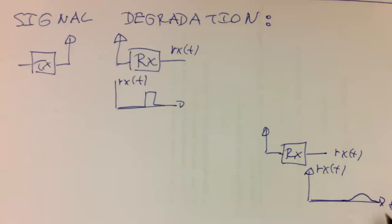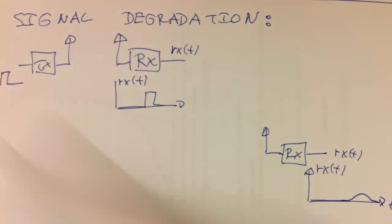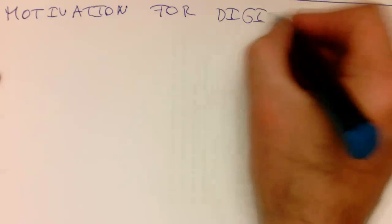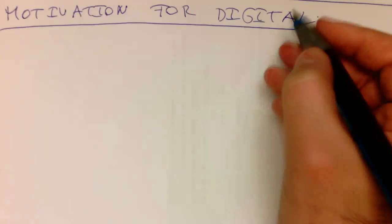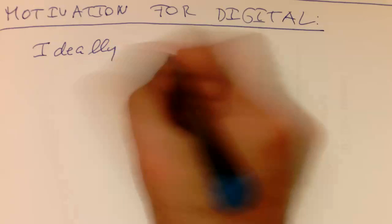Now in a digital system, what we would like to have is we would like to transmit that pulse here. And we would like to have always at the output here this pulse, irrespective of the distance. So the motivation for digital is that we have ideally no degradation.